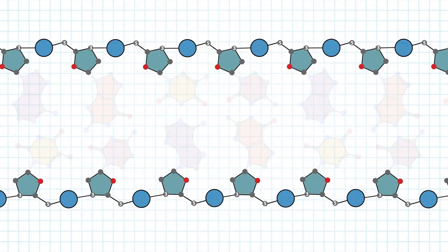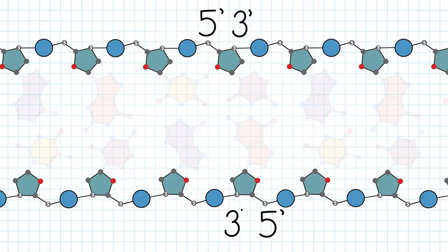Looking within the sugars, there is an intrinsic orientation difference between the two strands. On the top strand, you can see that the five prime carbon of each sugar is on the left, and the three prime carbon is on the right. The opposite is true for the bottom strand. Reading left to right, that makes the top strand orientation five prime to three prime, and the bottom strand orientation three prime to five prime.